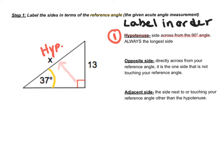The next side is the opposite side, which is the side directly across from the reference angle. So if I start at the reference angle of 37 and go straight across, it is the 13. So I am going to call this side the opposite.